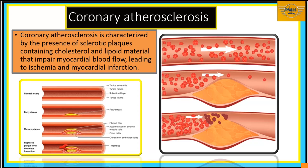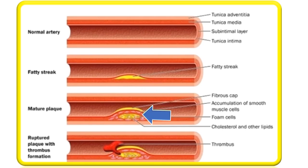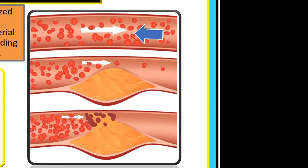We'll consider coronary atherosclerosis — a condition where sclerotic plaques containing cholesterol and lipoid materials impair the flow of blood to the heart, leading to ischemia and myocardial infarction. Looking at the images: we see the normal artery, then fatty streak gathering, then formation of mature plaques, and finally formation of thrombosis with near total blockade of blood flow.